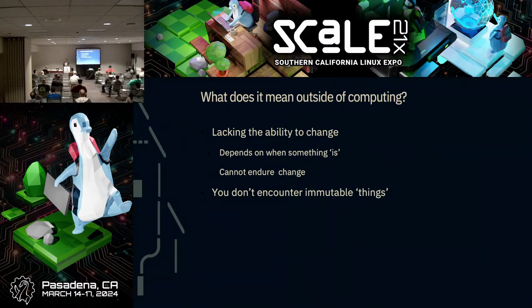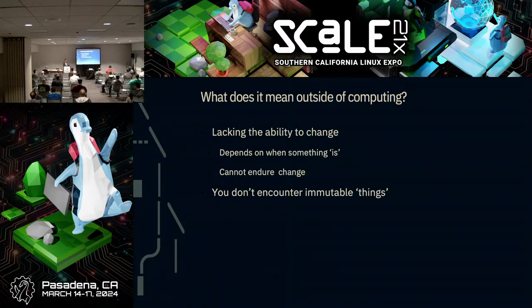When we walk anywhere on this earth, we don't encounter anything that is immutable from a philosophical standpoint. Everything erodes, everything changes. The only thing we really encounter in daily life that is immutable is something like a natural law. For example, a triangle - the sum of the angles is 180 degrees. That is immutable. If we were to change that property, it would no longer be a triangle. And thus, it is an immutable law.